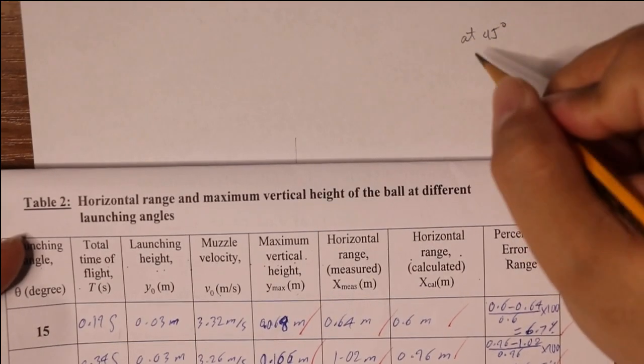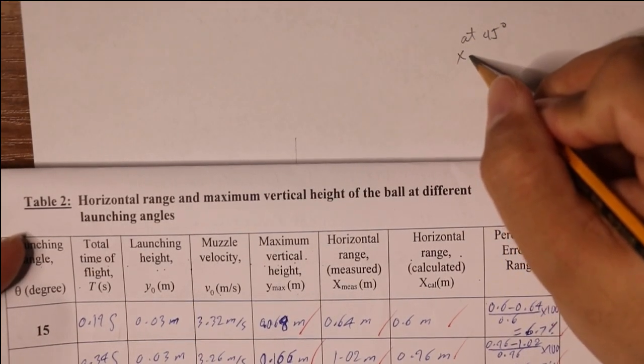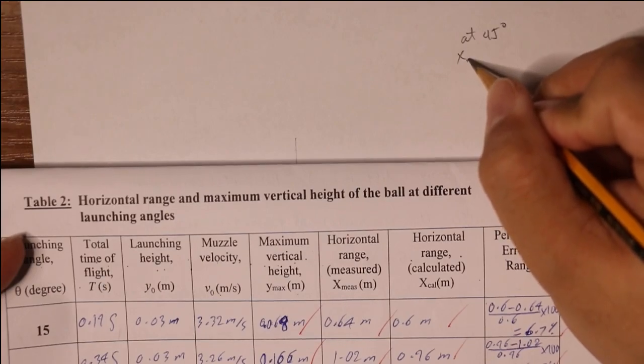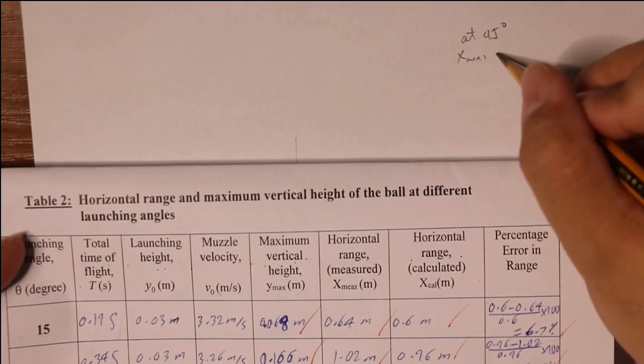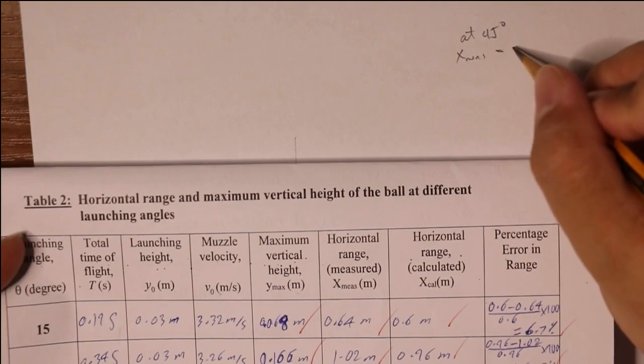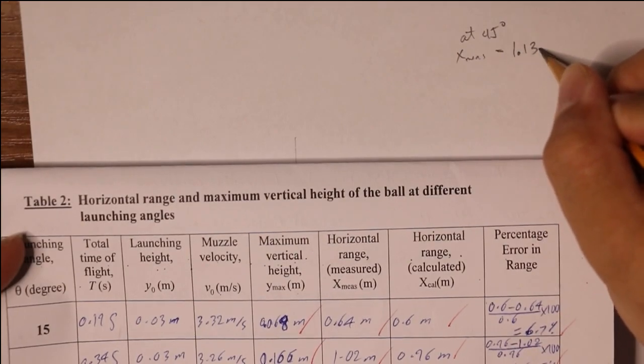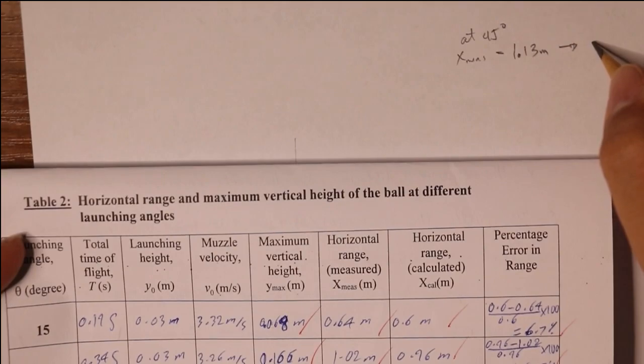At 45 degrees, X measured or X calculated is equal to 1.13 meters. This will scale down to 11.3 centimeters.